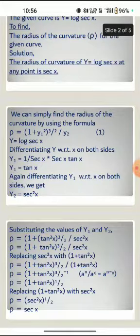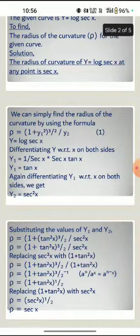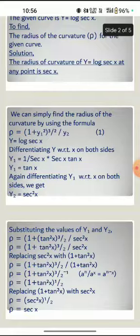Substituting the values of y₁ and y₂: ρ = (1 + tan²x)^(3/2) / sec²x. By further simplification, ρ = (1 + tan²x)^(3/2) / (1 + tan²x) = (1 + tan²x)^(1/2). Replacing (1 + tan²x) with sec²x, we get ρ = sec x.